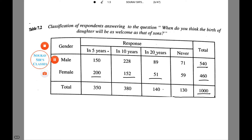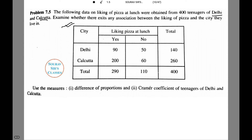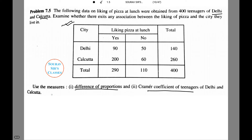Moving on to the next question. The following data on liking of pizza at lunch were obtained from 400 teenagers of Delhi and Calcutta. We need to examine whether there exists any association between the liking of pizza and the city they live in. We are given with the following table. We need to use the measures of difference of proportions and the Cramer's coefficient of teenagers of Delhi and Calcutta. Let's see how to do this.